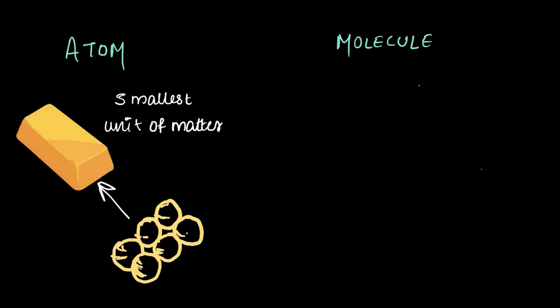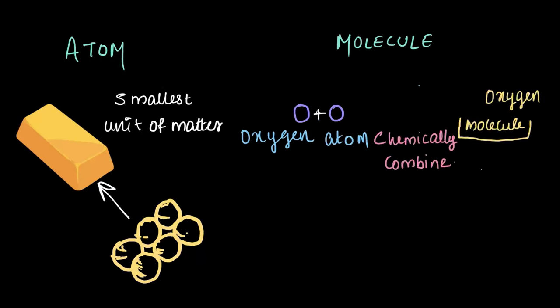When two or more atoms combine chemically, they form a molecule. For example, two oxygen atoms combine chemically to form an oxygen molecule.